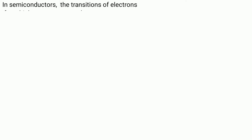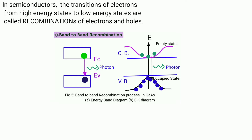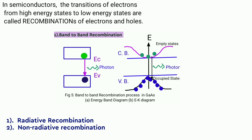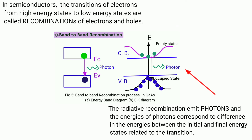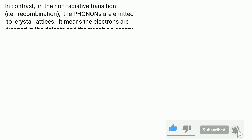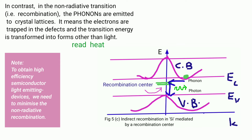In semiconductors, transitions of electrons from high energy states to low energy states are also known as recombination of electrons and holes. There are radiative and non-radiative recombinations. Radiative recombination emits photons with energy equal to the difference between initial and final energy states. In non-radiative recombination, phonons are emitted to the crystal lattice and the transition energy is transformed into forms other than light. To obtain high-efficiency light-emitting devices, non-radiative recombination must be minimized.